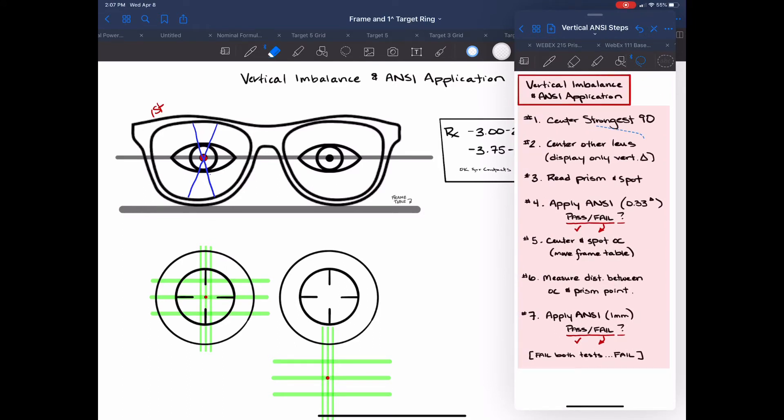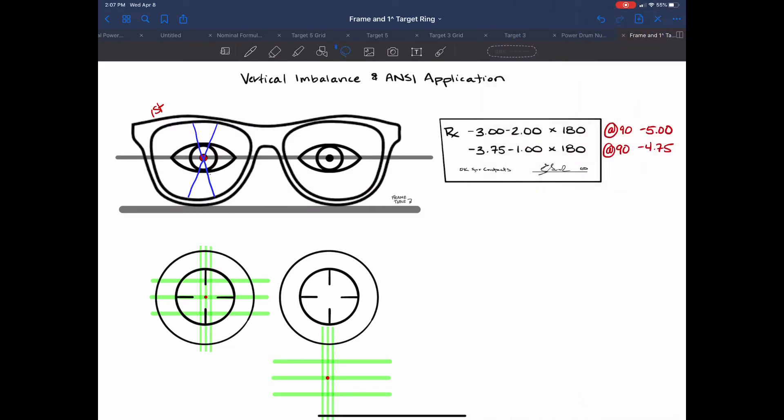Now we're going to center the other lens and display only a vertical prism. So now we're going to move over to this other lens and one thing we cannot do is move this frame table. So the thing that we're going to expect for vertical imbalance is that when we reposition the lens we are allowed to move it right or left but we're not allowed to move the frame table which is what's going to allow us to move the lens up or down. So if we can't move that frame table all we can do is move the lens right to left. We're going to get it so that all the prism is in the vertical meridian in the 90 and then set it right there.